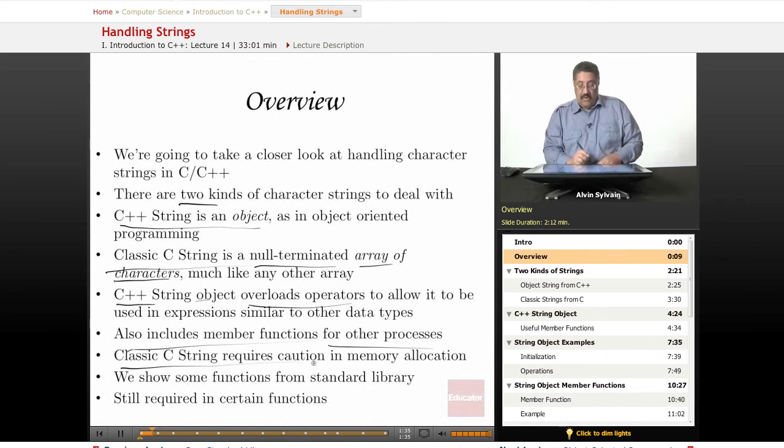The classic C string requires caution because you do have to allocate memory for it. The object will automatically reallocate as much memory as you need for a given operation, whereas the classic C string is on you as the programmer to make sure you have enough space for whatever you're going to do.